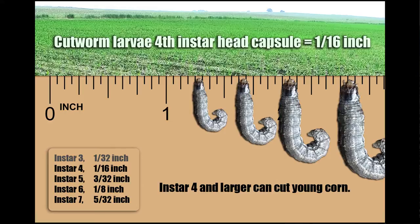If you had all 7th instar larvae, they will not be feeding that much longer in the field, so you're not going to have that much preventable yield loss. Spraying if you have mostly 6th or 7th instars will not pay you a benefit because there will not be that much more feeding.